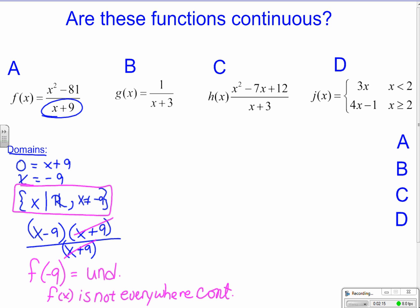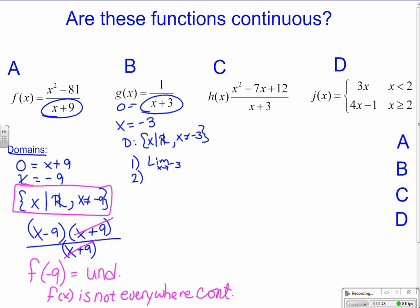Part b is actually a little bit easier to see. I do not want the denominator equaling zero, so where is it equal to zero? It's equal to zero when x equals negative 3. That means my domain is all x's except negative 3. One of the requirements for continuity is that the limit has to exist as I approach those values, and the function must be defined there. When I put in negative 3, I cannot get an output — it's undefined. One of the requirements for continuity is broken, so g of x is not continuous at x equals negative 3.